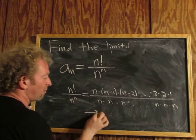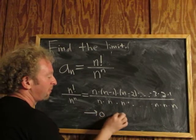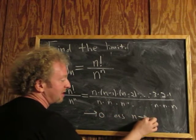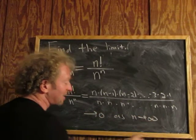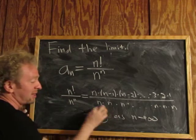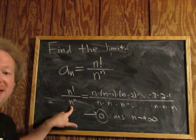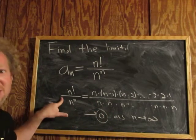So this approaches 0 as n approaches infinity. There is a limit and the limit is 0 because n to the n grows faster than n factorial.